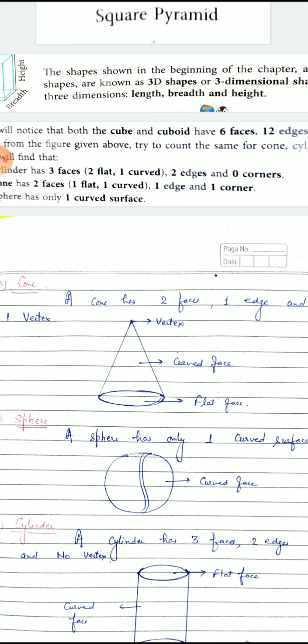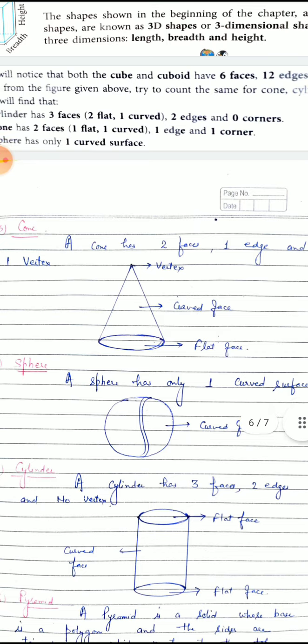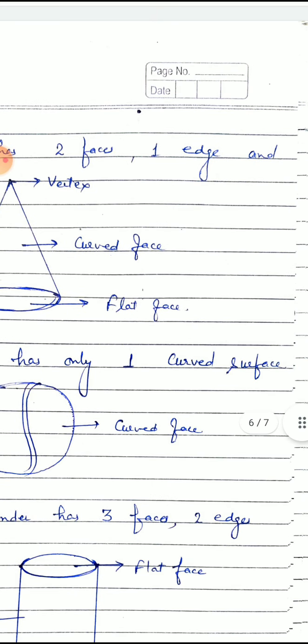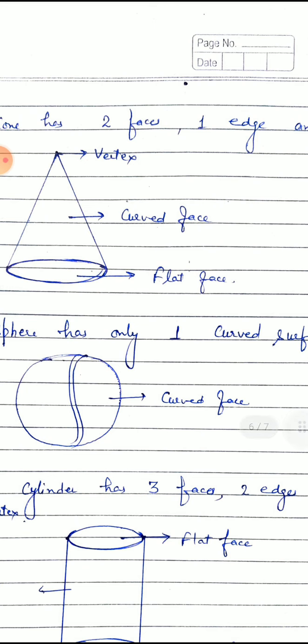What is the face? Face is a flat surface. It can be curved or flat form. Now look at this figure. Sphere has only one curved surface. You can see the ball.